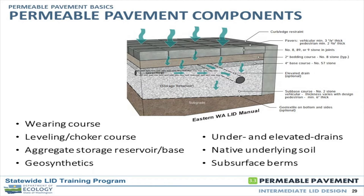There may be some geosynthetics involved — we're going to talk a lot about that. There's a lot of nuance around that; they are often overused. More importantly, think about elevated drains. And of course the native underlying soils — we're going to talk a lot about that. A permeable pavement system is just a really big infiltration device, a big distributed infiltration facility. How you deal with the subgrade is critical. You may be designing and building on slopes, so there may be subsurface berms in these systems.